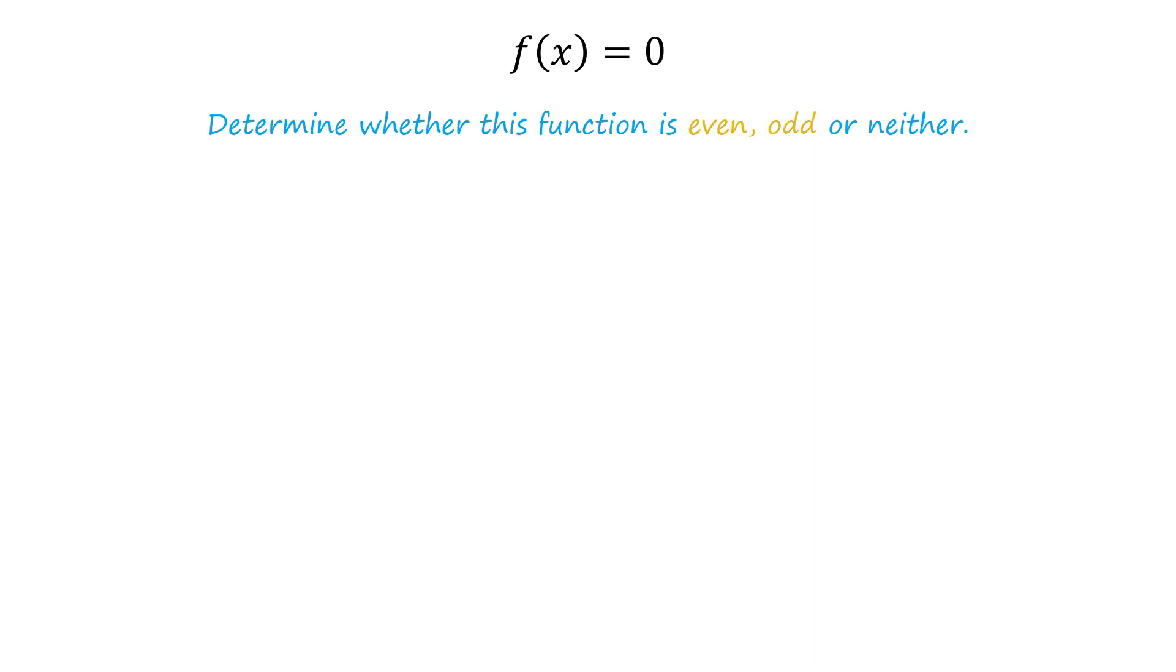The answer to this problem is that f of x is both an even function and an odd function. Since f of x is a constant function, therefore f of negative x also equals 0. Since f of x equals 0, negative of f of x also equals 0.